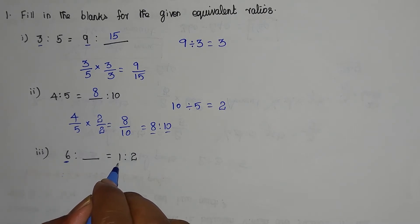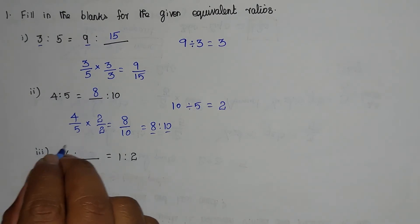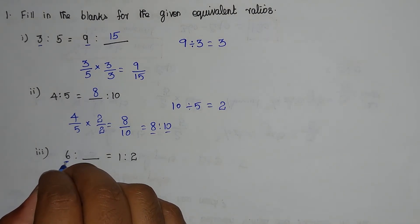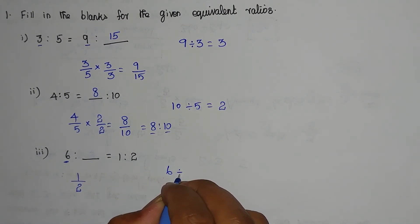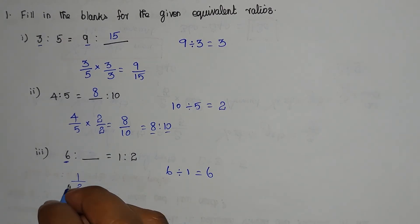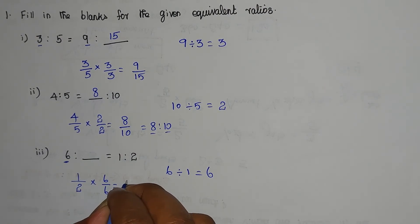This numerator divided by this numerator value. In this 1 by 2, any common number is multiplied by this numerator value. 6 divided by 1, we will get the answer 6. 6 times 2 equals 12.